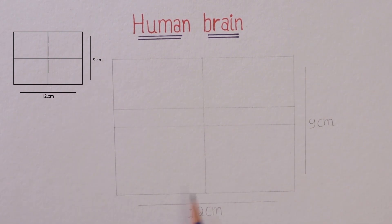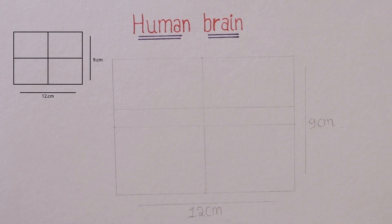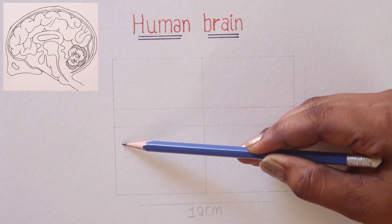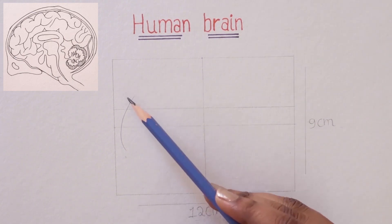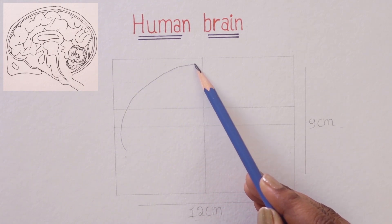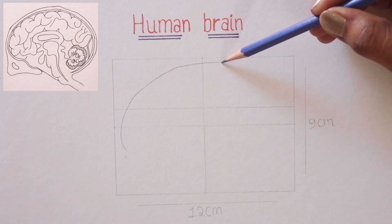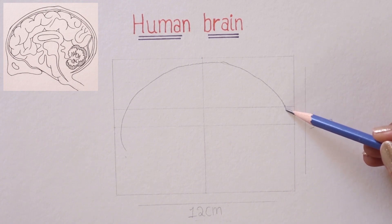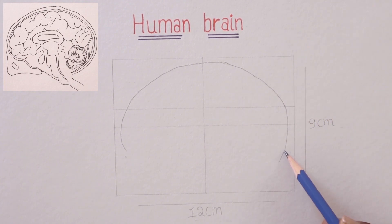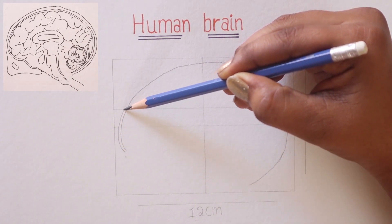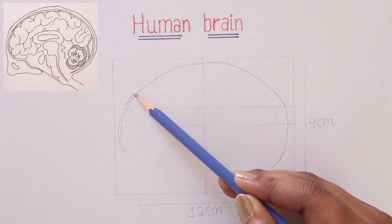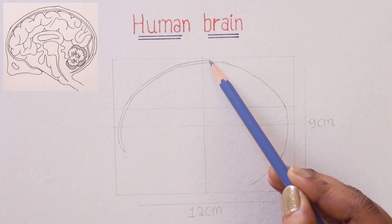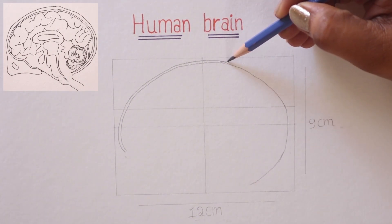Let's start drawing by making a plus shape like this, and then make a box surrounded by it with the mentioned centimeters. I'm going to draw the outer line first and then draw one more membrane of the brain. Keep a little distance between both the brains.